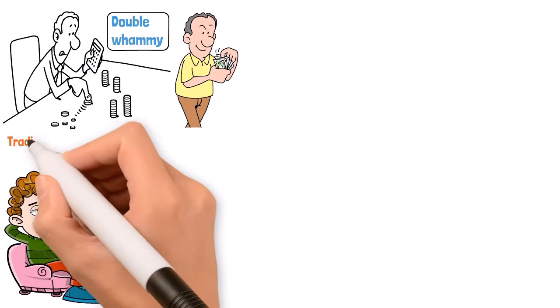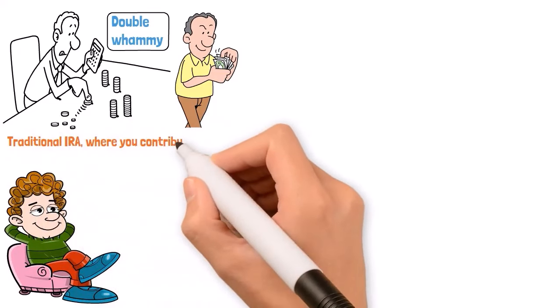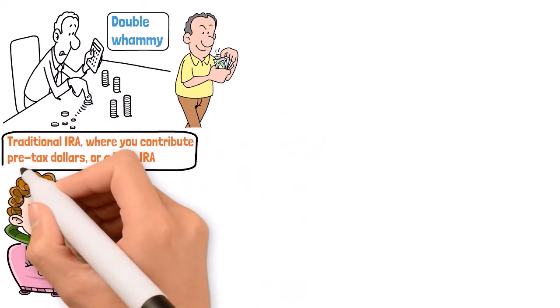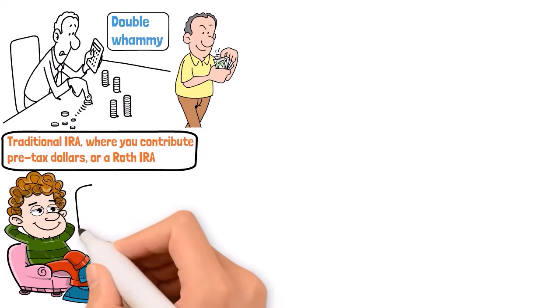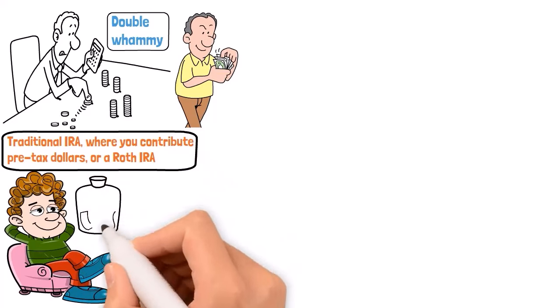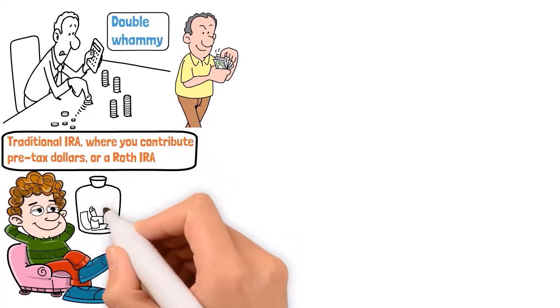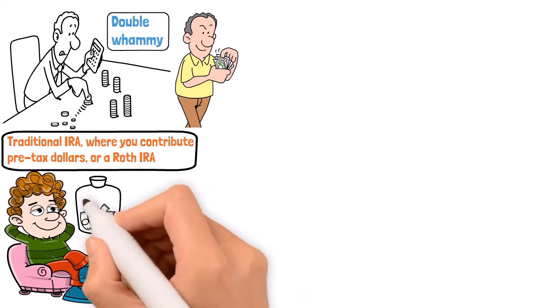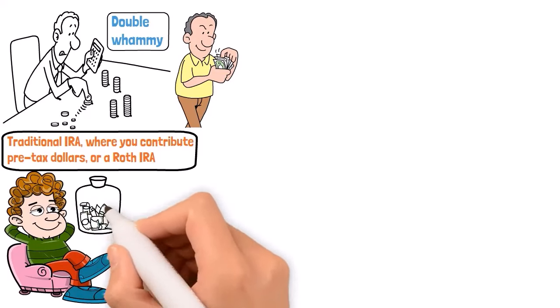You can choose between a traditional IRA where you contribute pre-tax dollars or a Roth IRA where you pay taxes now and enjoy tax-free withdrawals later. And the best part, you can start with as little as you can afford and grow from there. Not having a company retirement plan isn't a roadblock. It's a detour to potentially even better saving avenues. So take control, open that IRA and watch your retirement savings flourish.